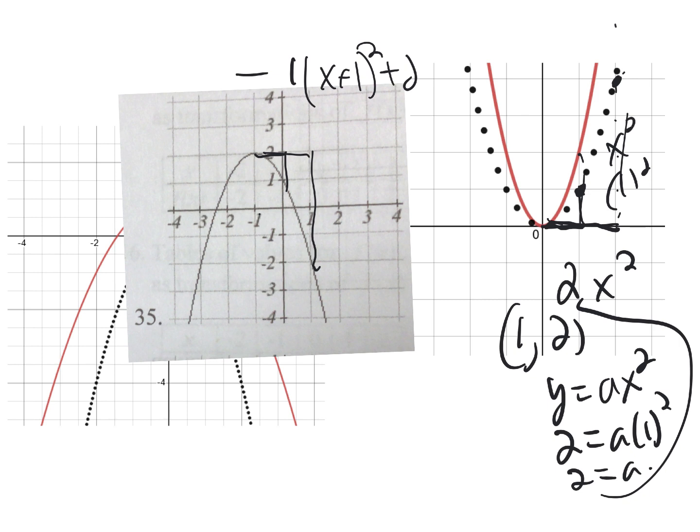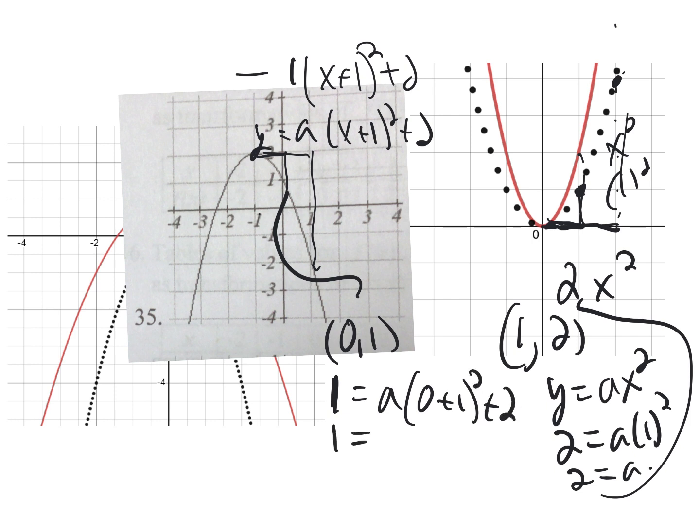Now, if you want to do it a different way, I see when x equals 0, y equals 1. So if I have A times x plus 1 squared plus 2, I'm going to replace x, and that's equal to y. I'm going to replace y with 1. I don't know what A is, and I'm going to replace x with 0.